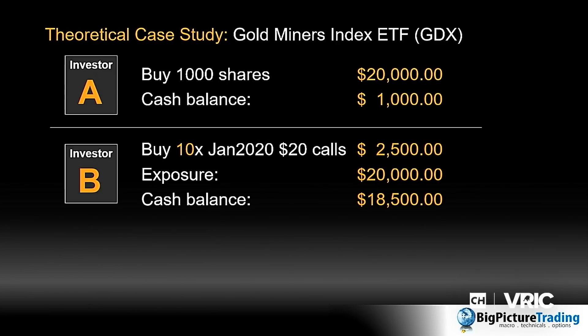Investor B is not looking to leverage with options — they want to control the same amount of stock as Investor A. Each call option controls 100 shares, so to control the same 1,000 shares, they buy 10 call options at $2.50 a share, outlaying $2,500. They're controlling $20,000 of stock but only committing $2,500, leaving $18,500 in cash not yet committed to the trade.